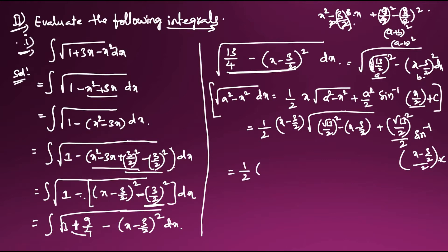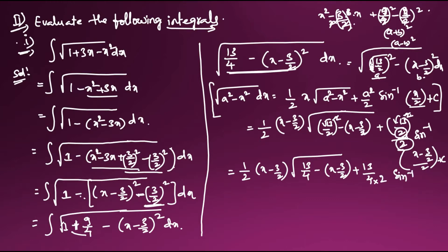Simplifying: the 2s cancel appropriately, giving (1/2)·(x - 3/2)·√(13/4 - (x - 3/2)²) + (13/8)·sin⁻¹((2x - 3)/√13) + C. So sin⁻¹ of (2x - 3) divided by √13, plus C. This is the answer to the first question.